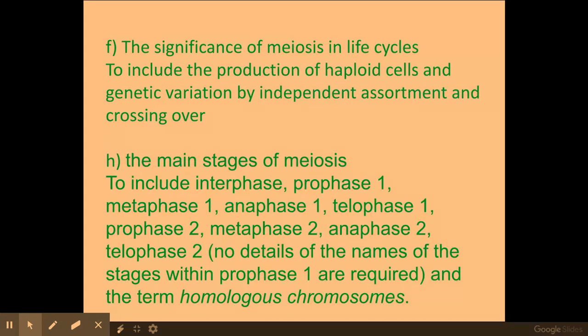So there you have it, that is the stages of meiosis involving all of the stages involved, and what crossing over and independent assortment can do to give rise to genetic variation.